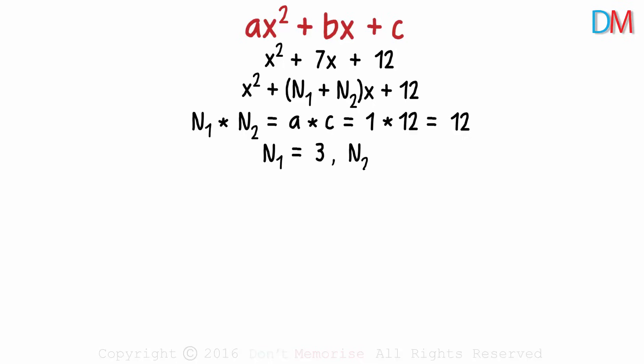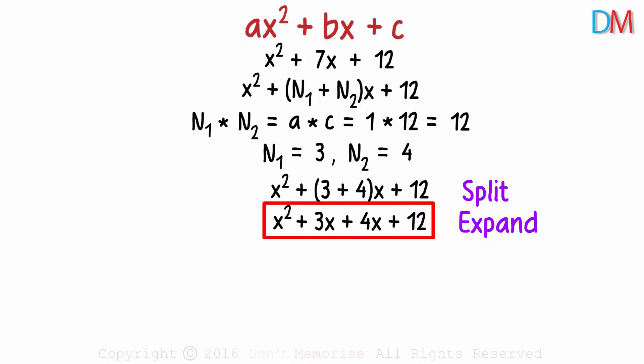Yes, 3 and 4. 3 plus 4 is 7 and 3 times 4 is 12. So this polynomial can be written like this. The middle term after expansion will look something like this. What we've done here is split the middle term. 7x was written as 3x plus 4x.